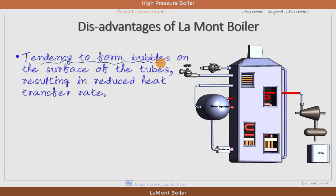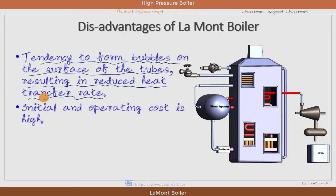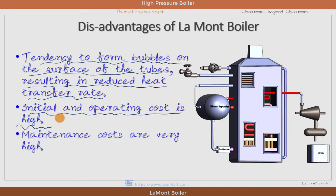There are a few disadvantages of the Lamont boiler. There is a tendency to form bubbles on the surface of the tubes, resulting in a reduced heat transfer rate. During the formation of steam within the water tubes, bubbles form and act as a barrier for heat transfer from the tubes to the water. The initial and operating cost of the Lamont boiler is higher because it produces high pressure, high temperature steam at very high capacity. Maintenance costs are also very high due to the high pressure, high temperature steam production.